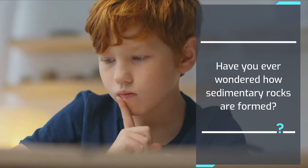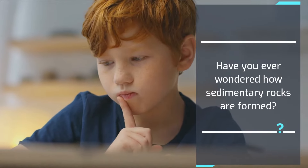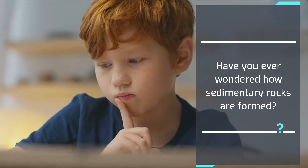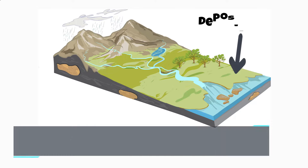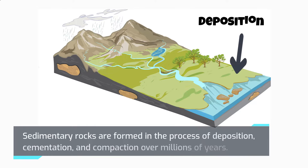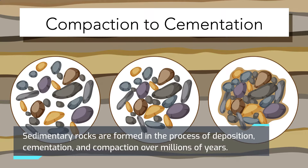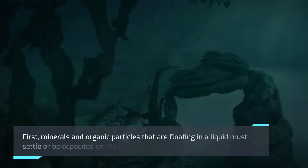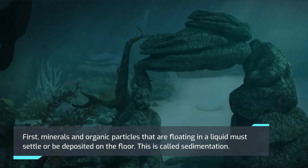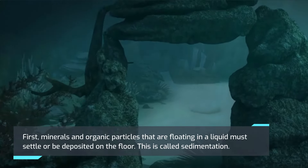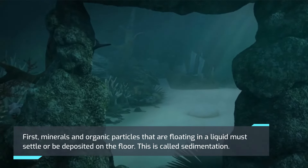Have you ever wondered how sedimentary rocks are formed? Sedimentary rocks are formed through the process of deposition, cementation, and compaction over millions of years. First, minerals and organic particles that are floating in the liquid must settle or be deposited on the floor.